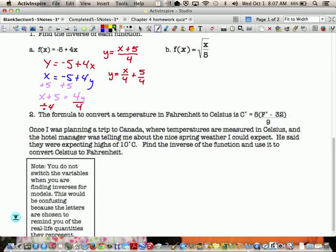Those are your two inverse functions. So at the end, we should really write them as f inverse x plus 5 over 4.